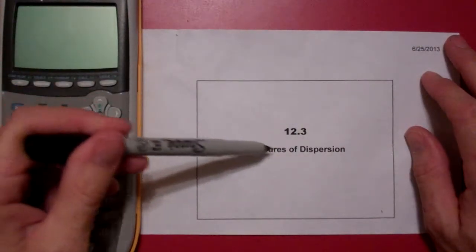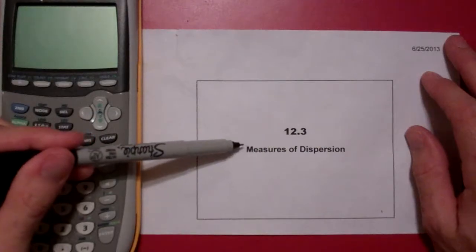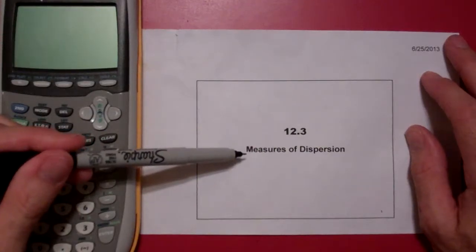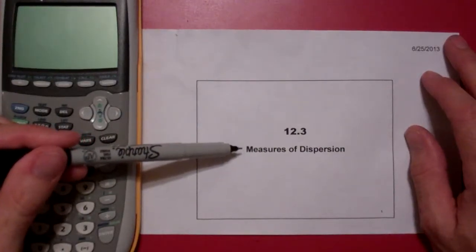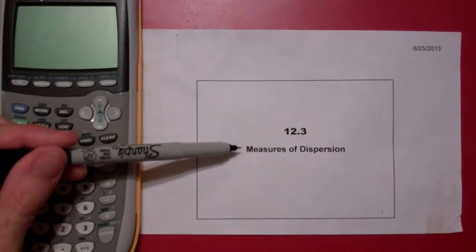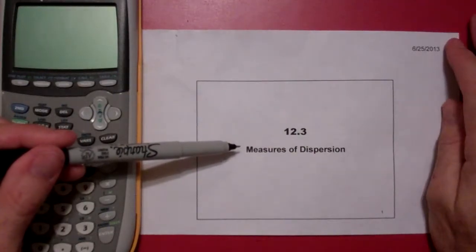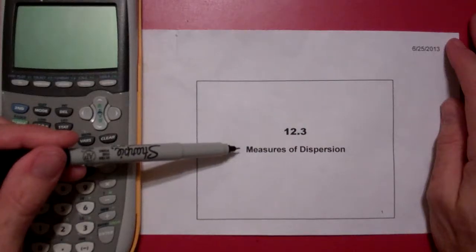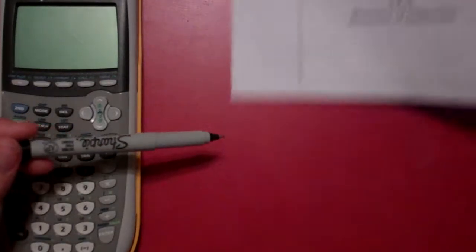Today we're going to talk about measures of dispersion, which is basically measures of spread or variation. In the last video we talked about where the center might be, and now we're going to talk about how far away from the center the data is.